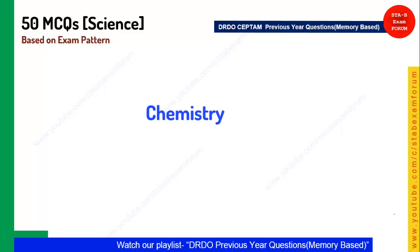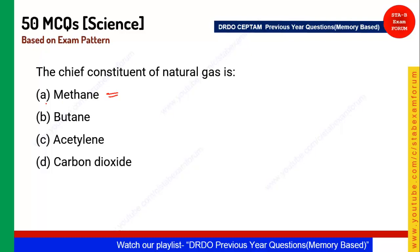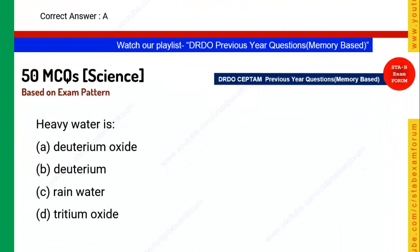First chemistry question: What is the chief constituent of natural gas? The answer is methane. Methane is the main component of natural gas, which is used for various purposes.